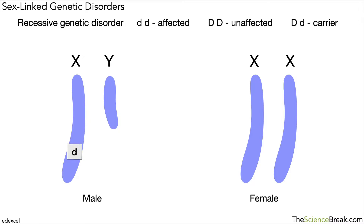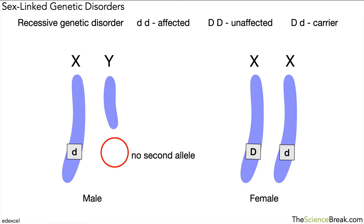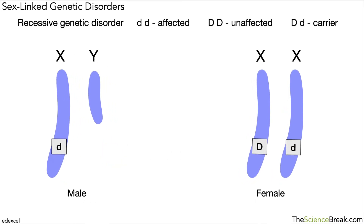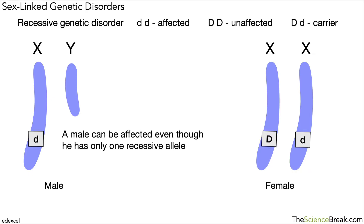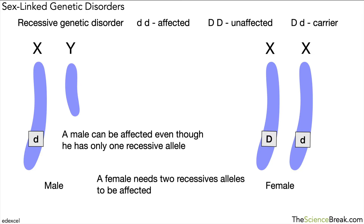For a male with a small 'd' on their X chromosome, they have one recessive allele, but there's no second allele because the Y chromosome is too short — it doesn't have that region of the chromosome. For a female, she might have a capital 'D' and a small 'd', and she does have two alleles. This means males can potentially have a sex-linked genetic disorder with just one recessive allele, whereas a female would need two recessive alleles to be affected.